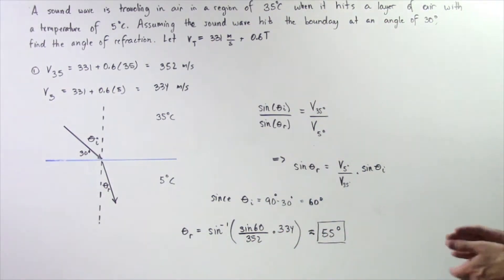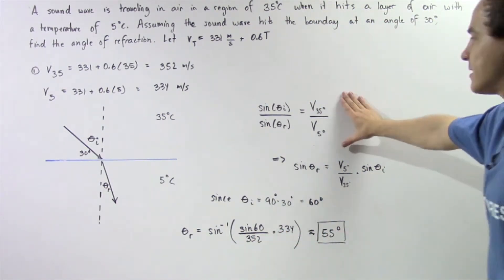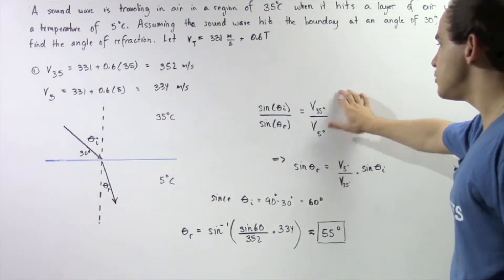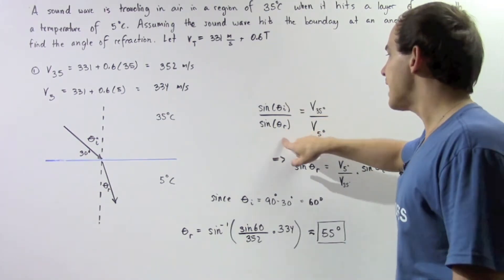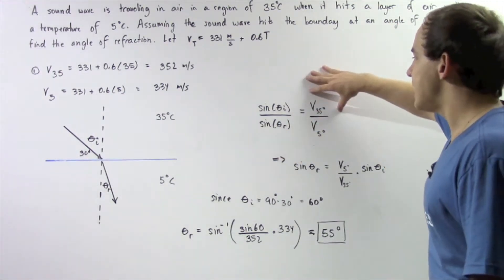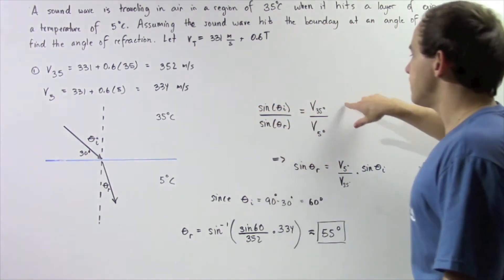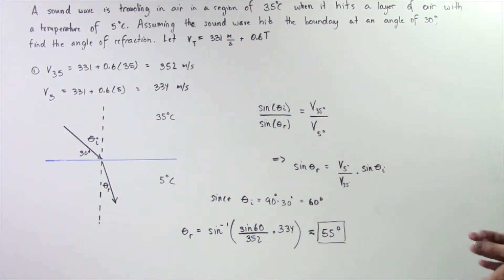So let's apply the law of refraction, which is basically given by the following equation. The sine of the angle of incidence divided by the sine of the angle of refraction is equal to the velocity at the 35 degree region divided by the velocity at the 5 degree region.